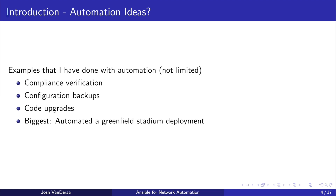Compliance verification — anyone with a Cisco ASA environment has seen ASA vulnerabilities come out. How do you know if those ASAs are vulnerable or not? I've used Ansible for that. Configuration backups — yes, there are some other tools out there such as Rancid and Oxidize, but I've done configuration backups with Ansible because it gave me more flexibility and allowed me to scale to whatever device types I needed.